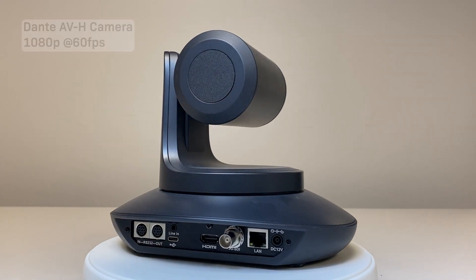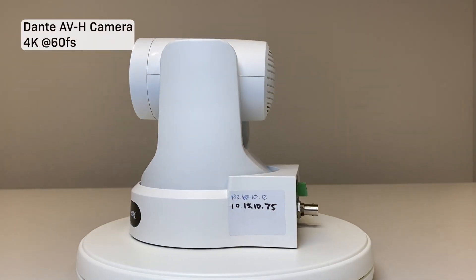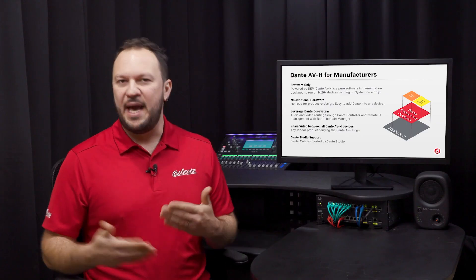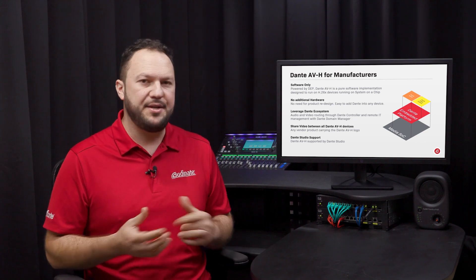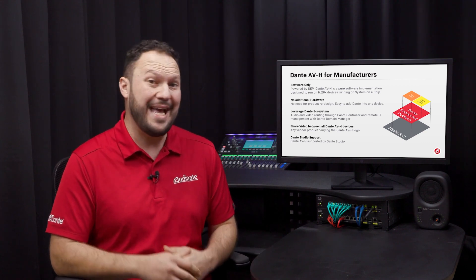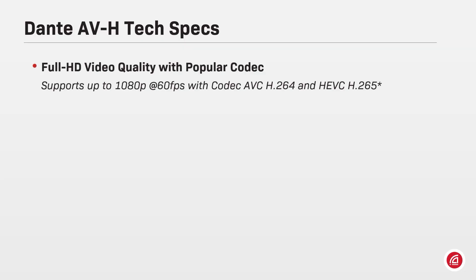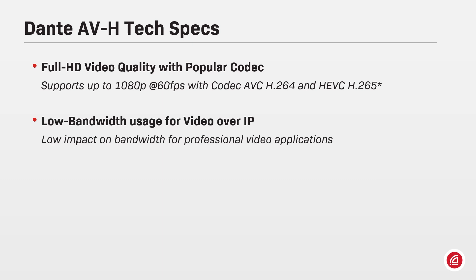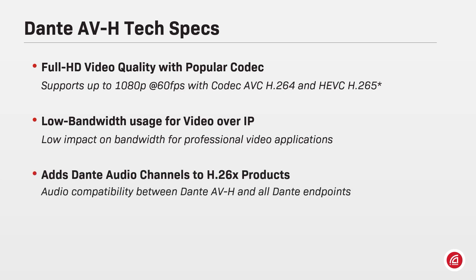Manufacturers can choose between a 1080p or a 4K version of the implementation according to their products and needs. Dante AVH currently supports AVC (H.264) and HEVC (H.265) with resolutions up to 1080p at 60 frames per second. It offers low impact on bandwidth for professional video applications with optimized codecs, and its implementation adds Dante audio channels to H.264 and H.265 products, all compatible with other Dante and Dante AV products.